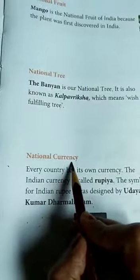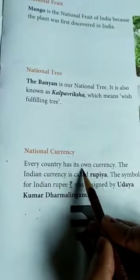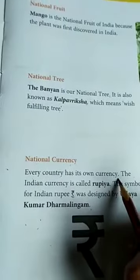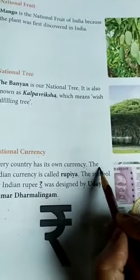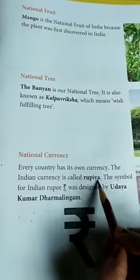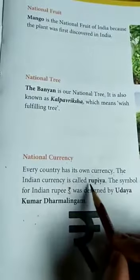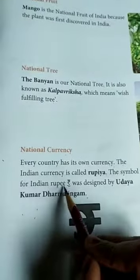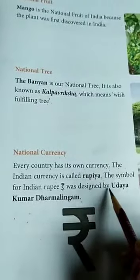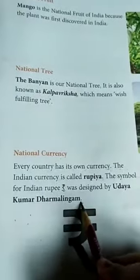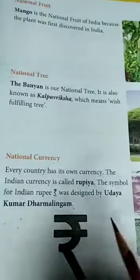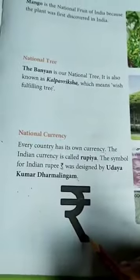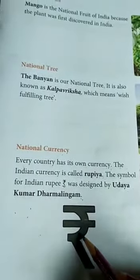National Currency. Every country has its own currency — प्रत्येक देश की अपनी एक currency होती है, means मुद्रा होती है. The Indian currency is called Rupee — Indian currency को Rupee कहा जाता है. The symbol of the Indian Rupee was designed by Udayakumar Dharmalingam — हमारा जो Indian Rupee है इसका जो symbol है उसको Udayakumar Dharmalingam ने design किया था.